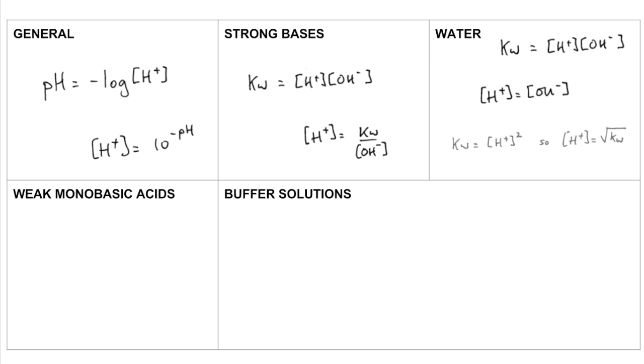And so therefore we can simplify the KW expression to H plus concentration squared. And so the H plus concentration will be the square root of KW. And then obviously we minus log the H plus concentration.